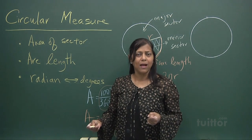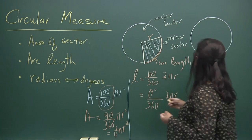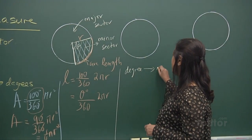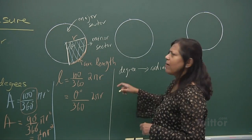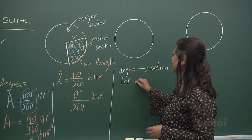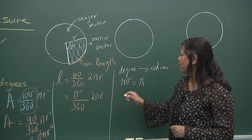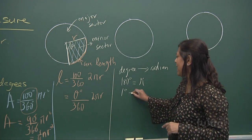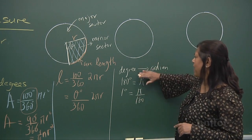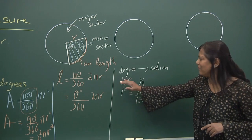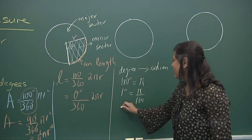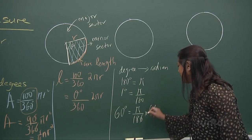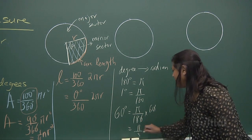I'll reiterate again how you change degrees to radians. If I have a degree — degrees to radians: 360 degrees is 2π, and 180 degrees is π radians. If I want 60 degrees, I find one degree first: one degree is π over 180. So 60 degrees will be π over 180 times 60 — cancel these — you get π over 3 radians.